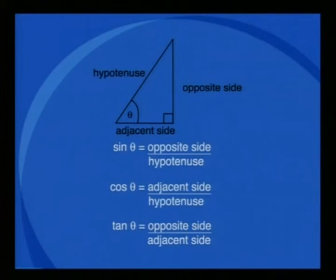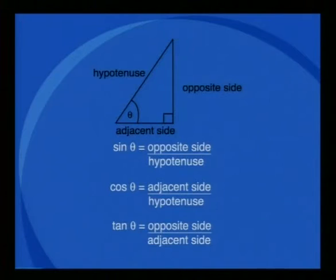We can apply the basic trig ratios to any right angle triangle. Let's recall the definitions quickly before we use them to solve a problem. Sine theta is equal to opposite over hypotenuse. Cos theta is equal to adjacent over hypotenuse. And tan theta is equal to opposite over adjacent.